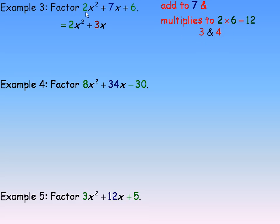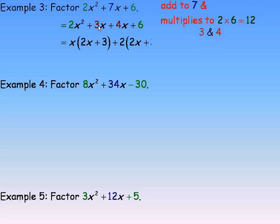So we would break the original trinomial down, leaving the first term alone and the last term alone, but the 7x gets changed into 3x plus 4x, using the 3 and the 4. And in the first two terms, the common factor is just x. There is a common factor of 2 in the last two terms. Factoring an x out of the first two terms: 2x squared divided by x would be 2x, and 3x divided by x would be 3.